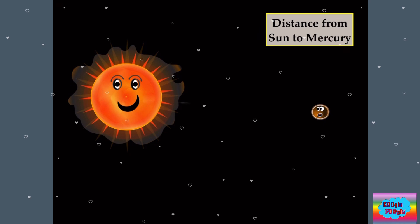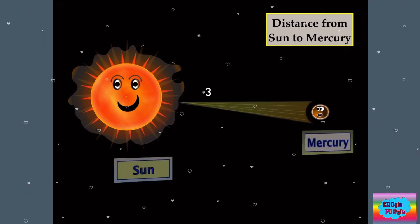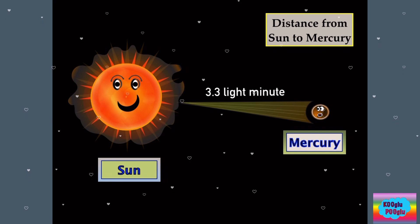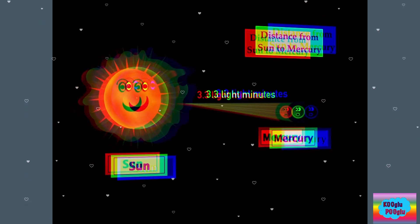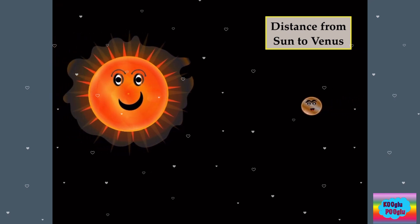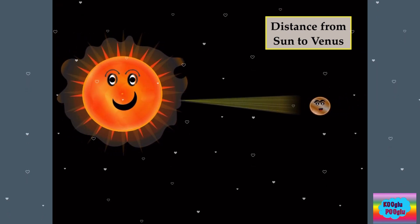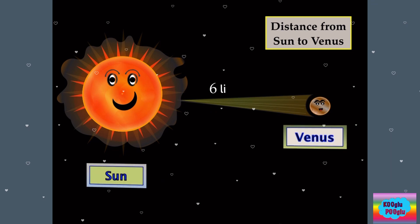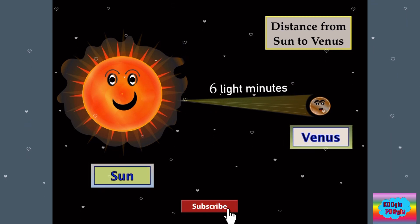The distance from the sun to Mercury is 3.3 light minutes. Now we got awesome Venus, which is six light minutes away.